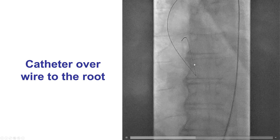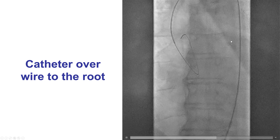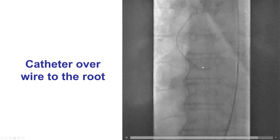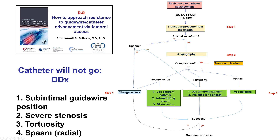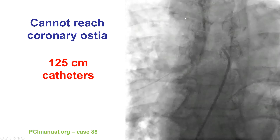The wire comes to the aortic root, then the catheter is advanced over the wire, the wire is removed, and the catheter is now in place. If there is resistance to advancing the catheter, there is a separate video for this, but the key concept is to not push hard. Instead, try to understand the reason for the resistance and solve the problem.